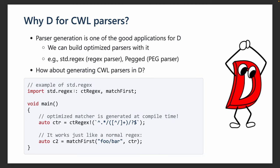So why D for CWL parsers? One reason is that parser generation is one of the good applications for D, and we can build optimized parsers with it. For example, there exist regular expression parsers in the standard libraries, and also PEG parsers. Both of them can generate matchers and parsers at compile time from a given string representation. So I thought: how about generating CWL parsers in D? That was the starting point of this project.